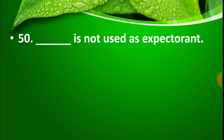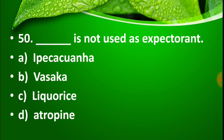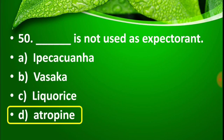Question number 50: Which drug is not used as an expectorant? Options: Option A: Ipecacuanha, Option B: Vasaka, Option C: Licorice, Option D: Atropine. The right answer is Option D, Atropine. Atropine is not used as an expectorant, while Ipecacuanha, Vasaka, and Licorice are used as expectorants and bronchodilators.